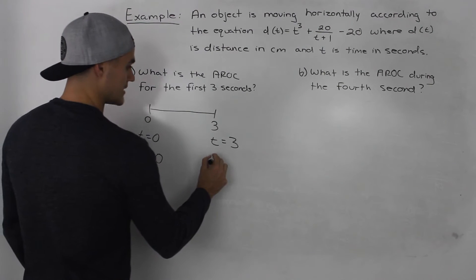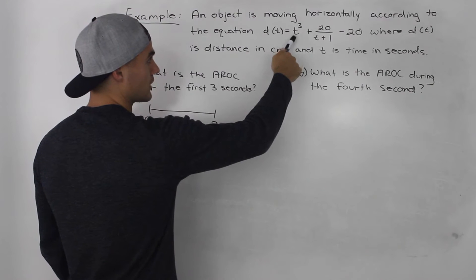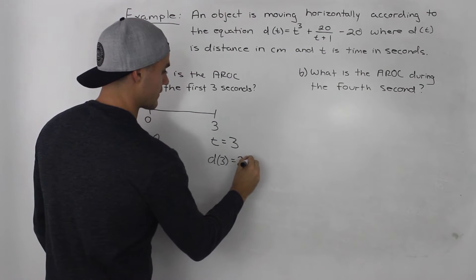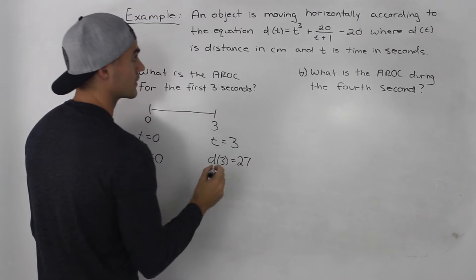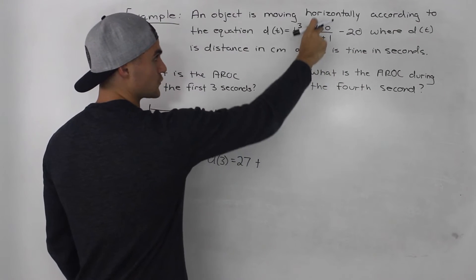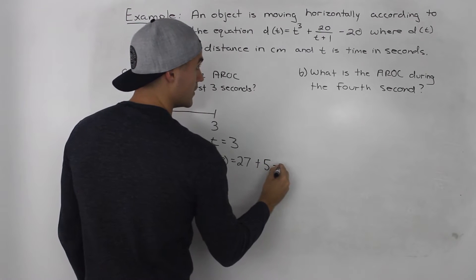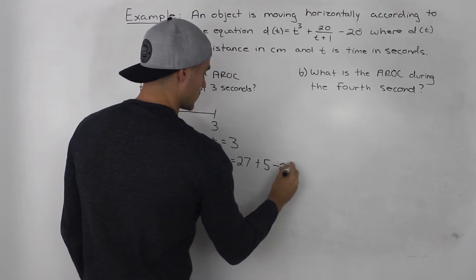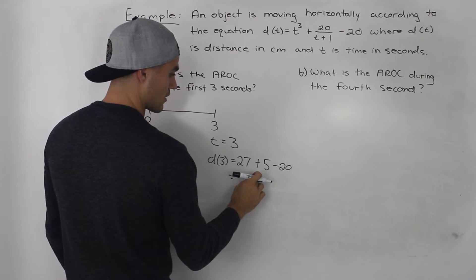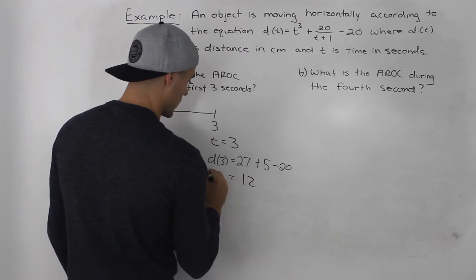For d(3), if we plug in 3 into the equation, we get 3³ = 27, plus 20 divided by (3+1) = 4, so 20 divided by 4 is 5, minus 20. That gives us 27 + 5 = 32, minus 20, which equals 12.